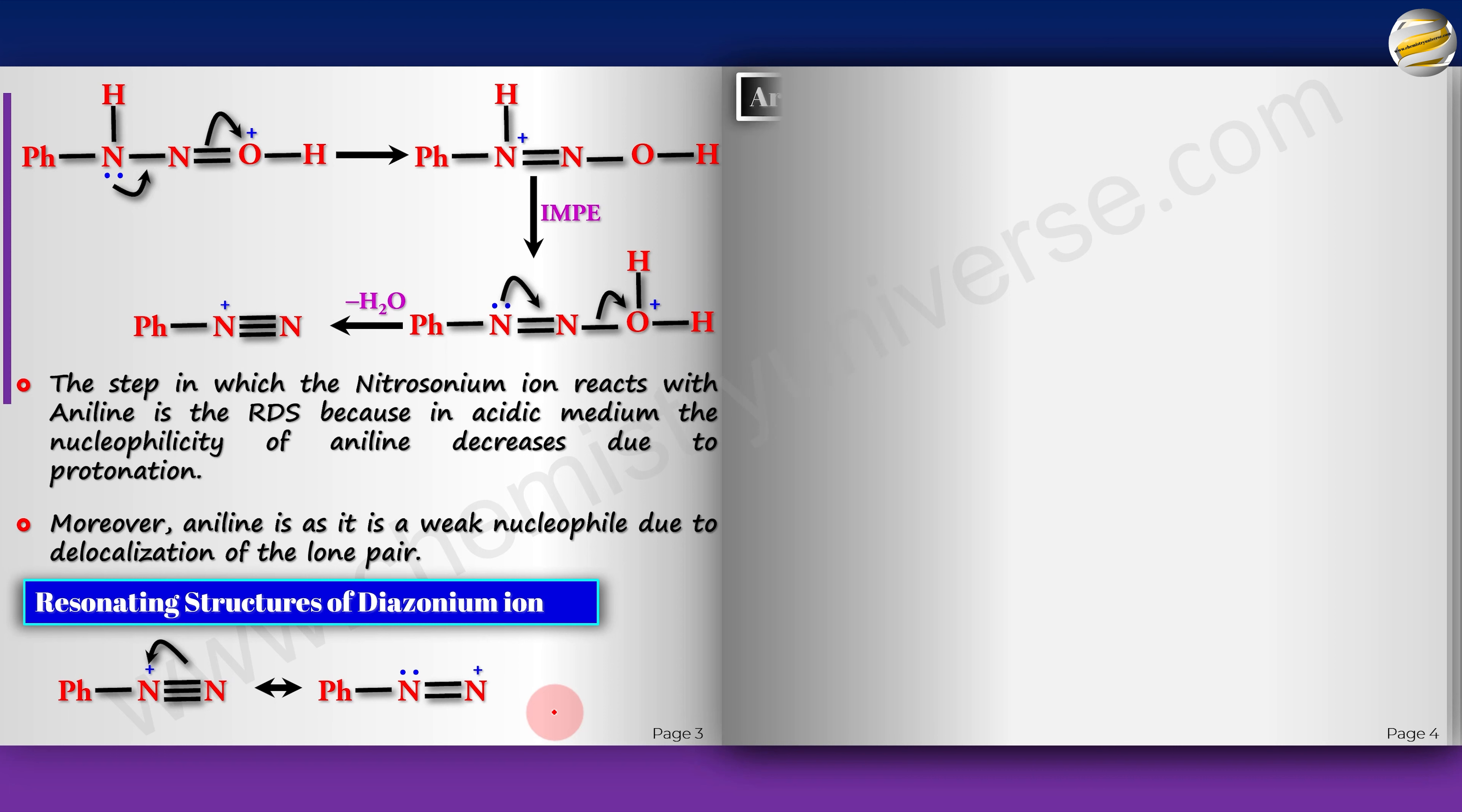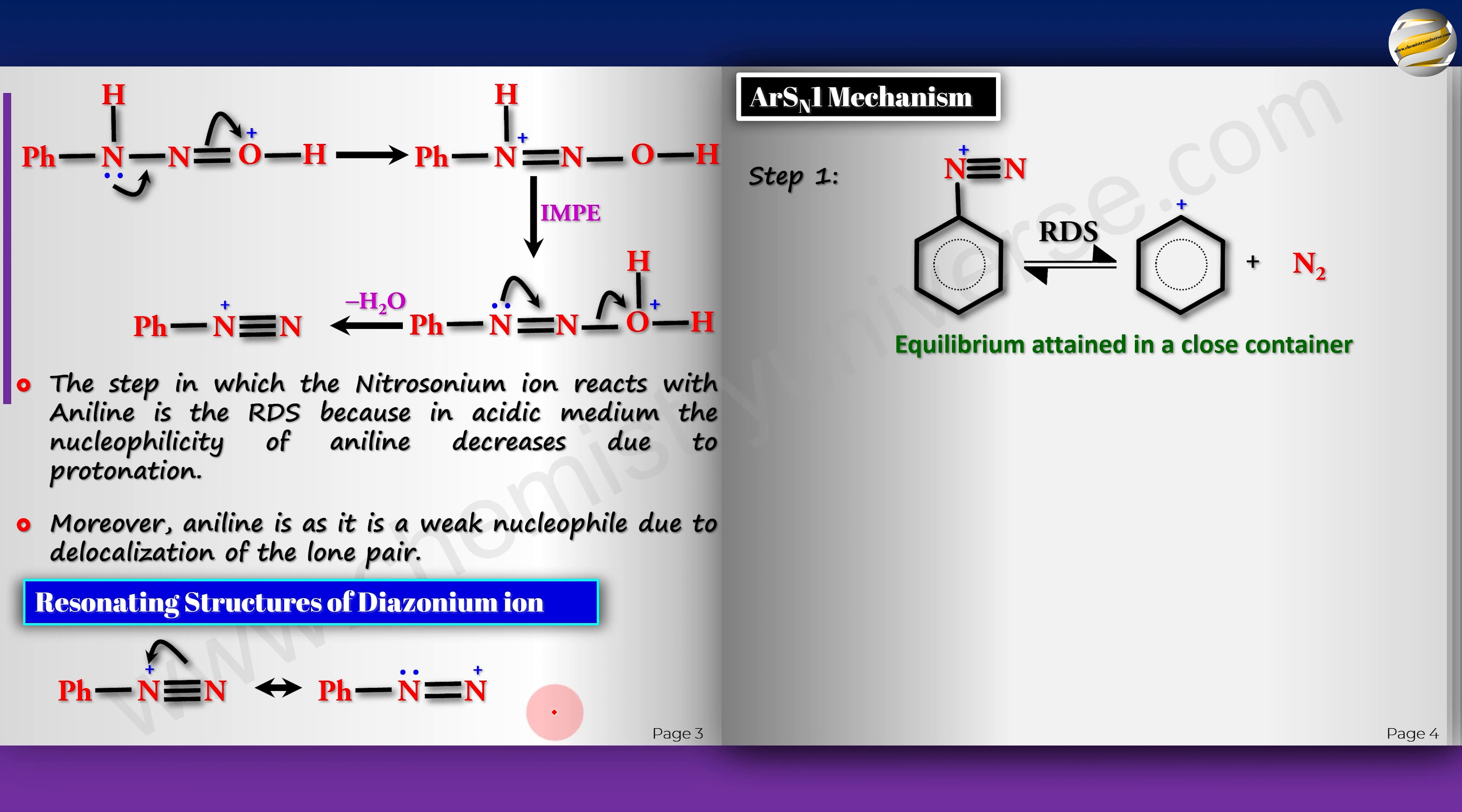Now let's look at the main one, ARSN1 mechanism. It's a very difficult mechanism to happen - only happens because of nitrogen gas formed. First the leaving group will go, just like SN1. You get a carbocation and nitrogen gas. If it is in closed container, there will be an equilibrium. This is the RDS - it's very difficult to form. This is not a stable carbocation at all. No resonance taking place. Remember this positive is on an empty SP2 orbital. It cannot resonate in the ring.